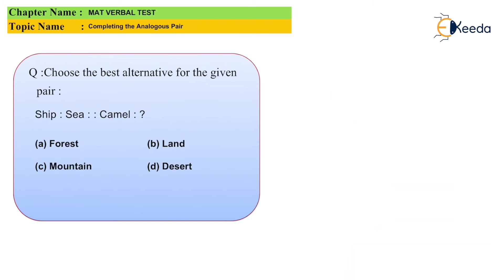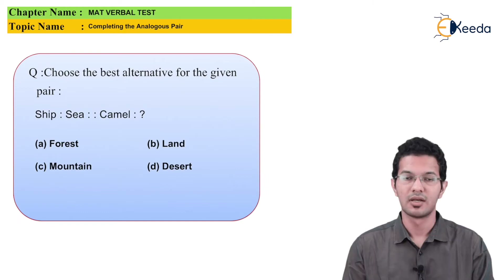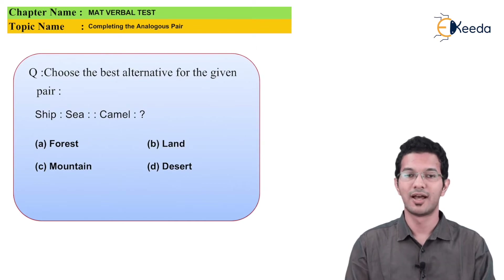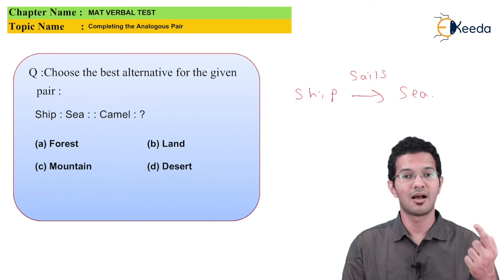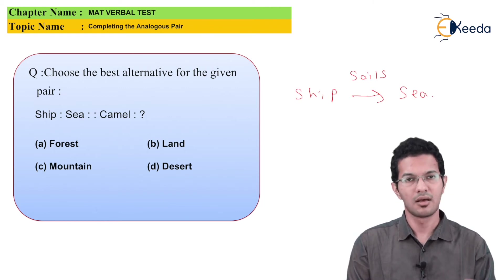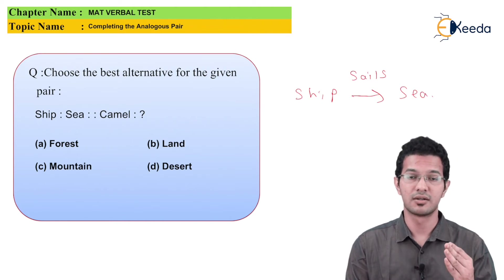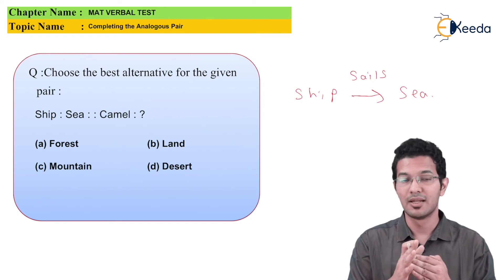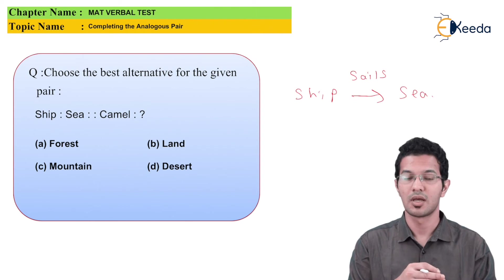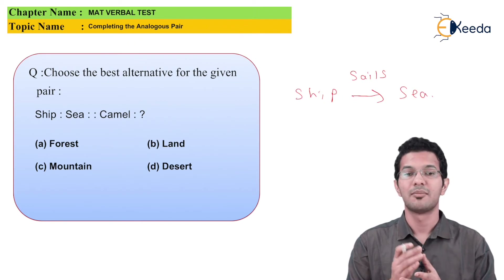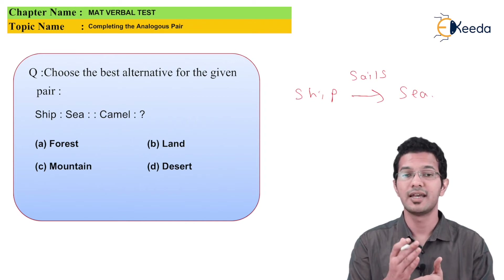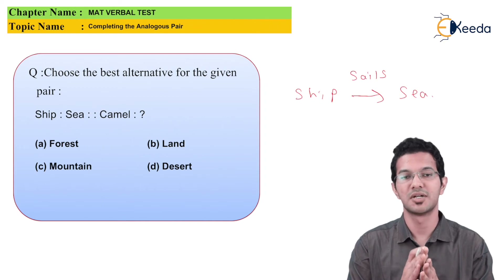The next MCQ says: Ship is related to Sea, and Camel is related to what? I know that a ship always sails in the sea. Similarly, a camel is used most appropriately in deserts. Looking at all four options, Option D - Desert - is the most appropriate answer. So the answer is Option D, which is Desert.